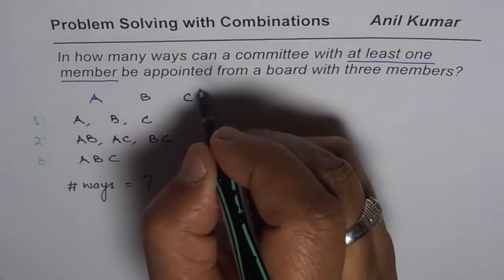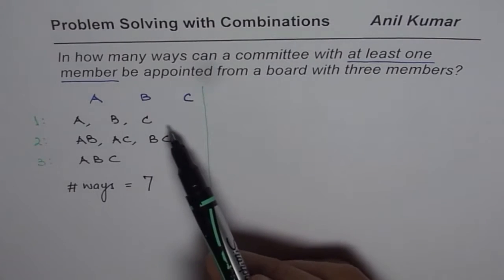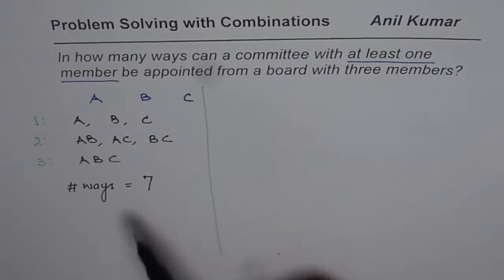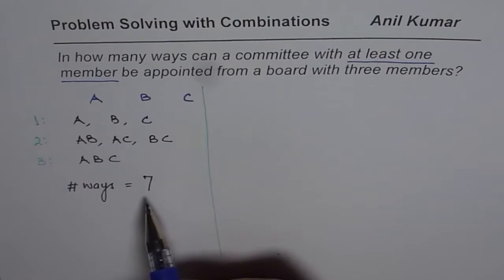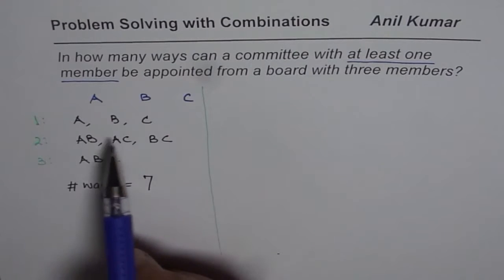Now I've purposely taken just three members. Imagine if we have 10 or 12 then this method will be very time consuming. Now what else we can do to quickly get to the solution. That is what we're trying to understand.